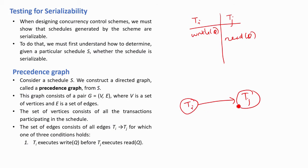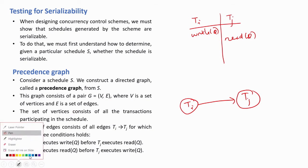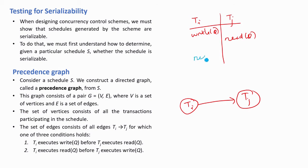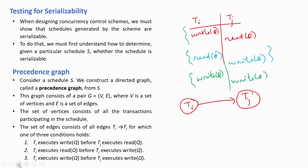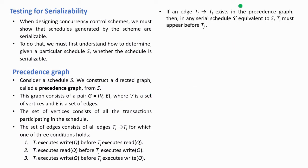The second condition is: ti executes read Q before tj executes write Q — that is, read Q appears before write Q. The third condition involves write Q before write Q. If any one of these three conditions holds, there will be an edge between ti and tj directed from ti to tj.